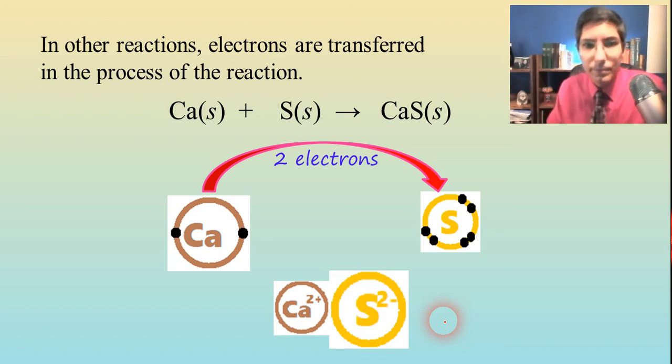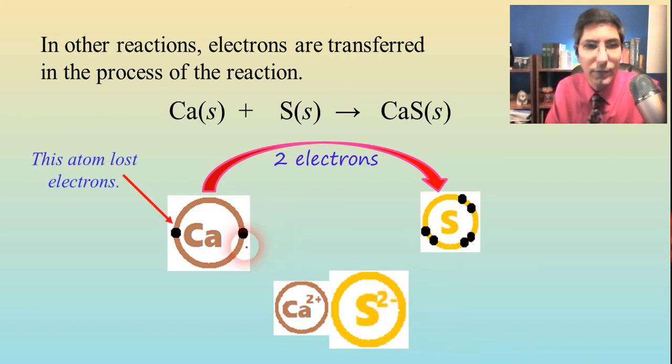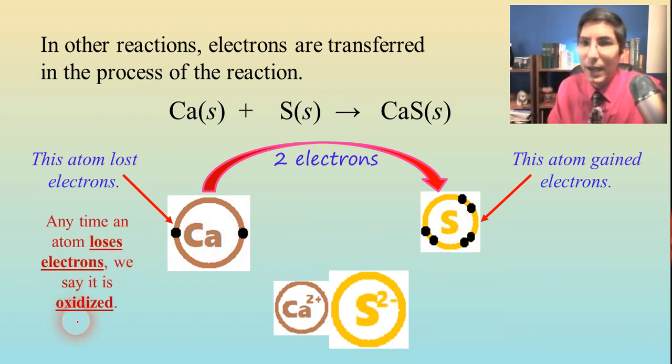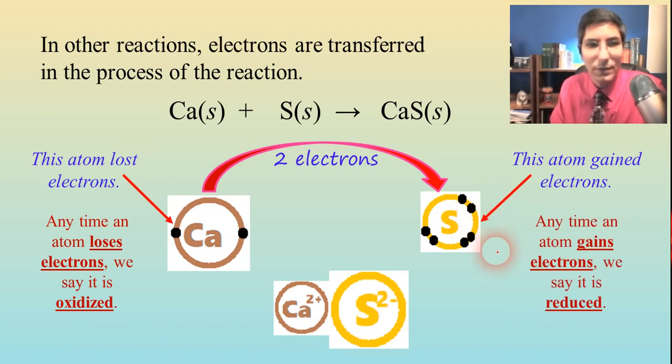Well, I want you to notice that there was an actual transfer of electrons here. The calcium lost electrons. We say that when something loses electrons, it is oxidized. On the other hand, sulfur gained electrons. So we can say that it was reduced. Losing electrons means it's oxidized. Gaining electrons means it's reduced.